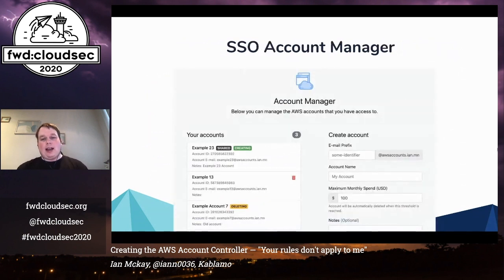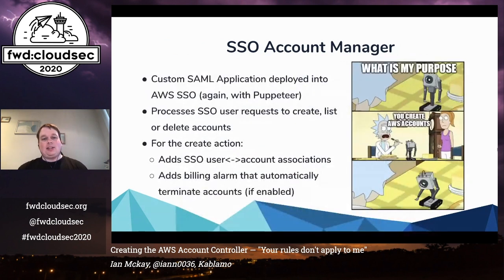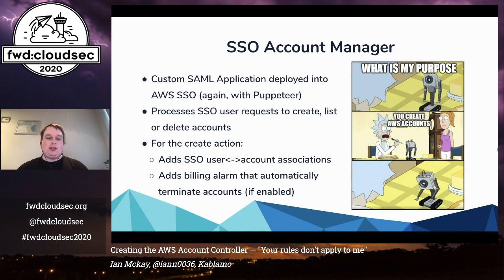Now let's look at how we create accounts. I've done a custom SAML application within AWS SSO called the Account Manager. The custom SAML application is deployed into SSO — again with Puppeteer because SSO doesn't have any APIs. It processes SSO user requests to create, list, or update accounts. For the create action, an asynchronous process goes and adds the SSO user account association and adds a billing alarm that automatically terminates accounts if it goes over the threshold, if that feature is enabled.